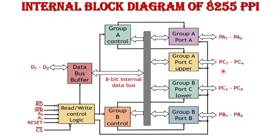Port C also has 8 bits divided into Port C Lower and Port C Upper. The output latch stores output data and the input latch stores input data. If a port works as an input port, input latches work and provide input data; if working as an output port, output latches provide output data. These ports are controlled by the control groups — Group A Control controls Port A and Port C Upper, and Group B Control controls Port B and Port C Lower. These ports and port controls are connected with the 8-bit bidirectional internal data bus.